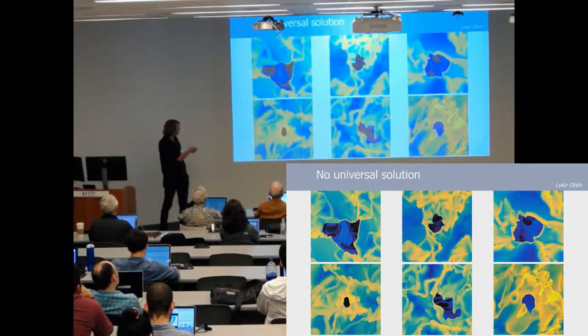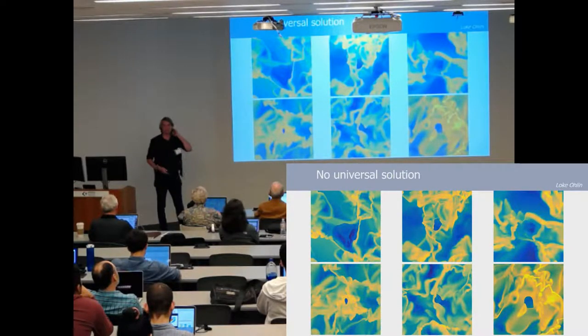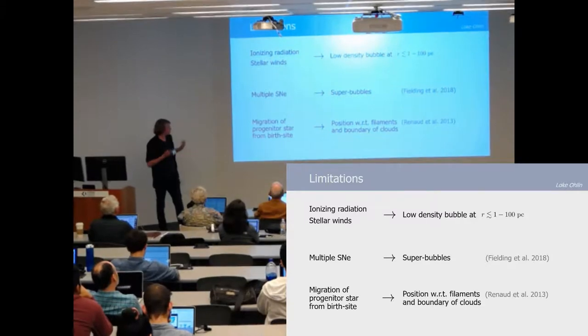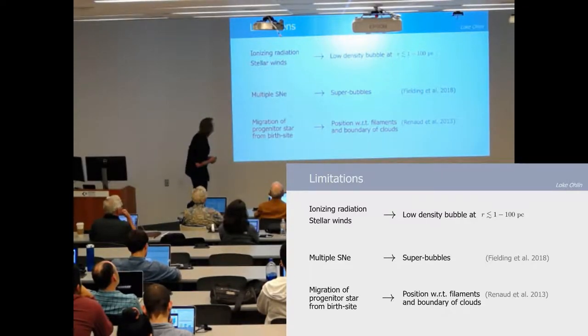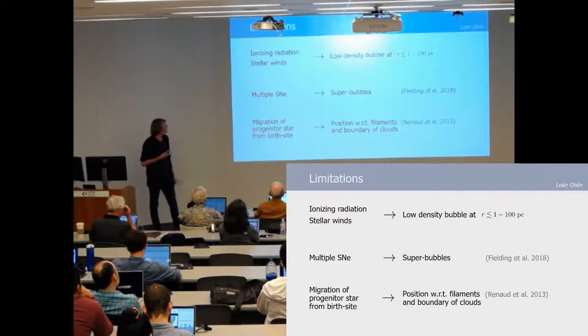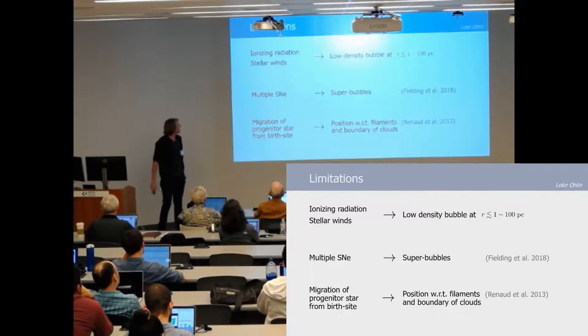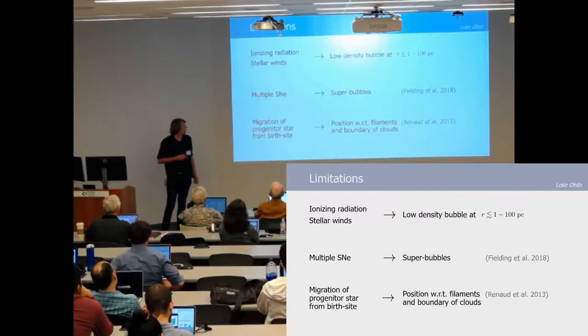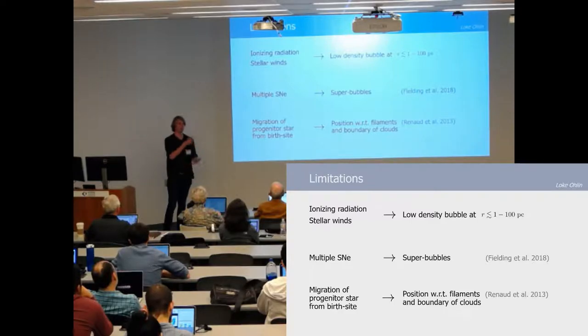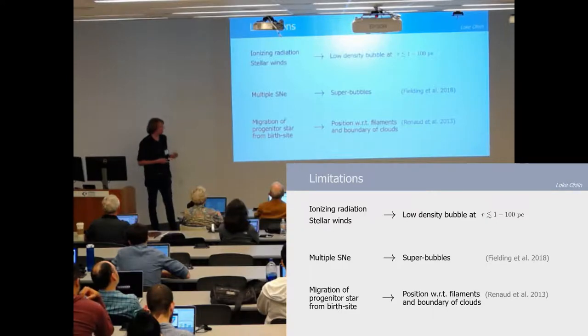So there's of course things missing in our study. We do not include any pre-stellar feedback which would generate a more low density environment around the progenitor star. We're also not considering the impact of multiple supernovae, but this has been studied in Fielding et al. which used similar methods and generated turbulence in which they detonated multiple supernovae.